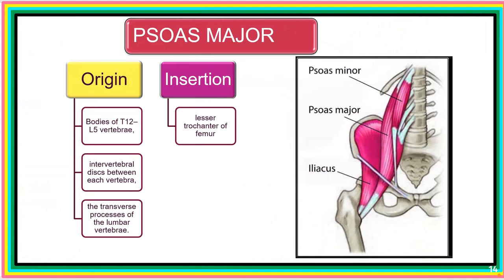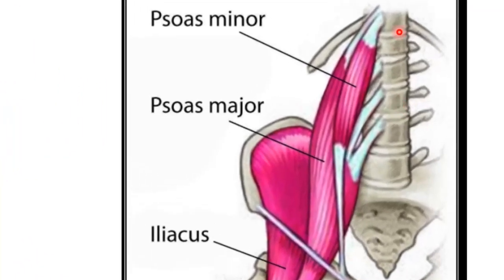For its origin, psoas major picks up origin from the T12 vertebra down to L1, L2, L3, L4, and L5. It runs through this whole length of vertebral bones from T12 to L5 and also picks origin from the intervertebral discs between the bodies of these vertebral bones. In addition, it also picks origin from the transverse processes of the five lumbar vertebrae.